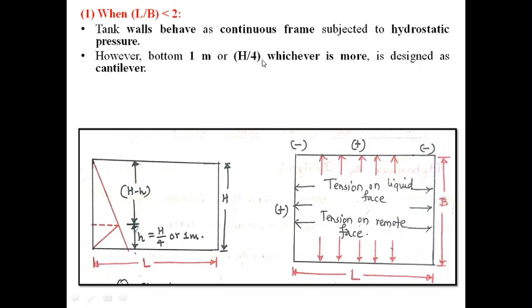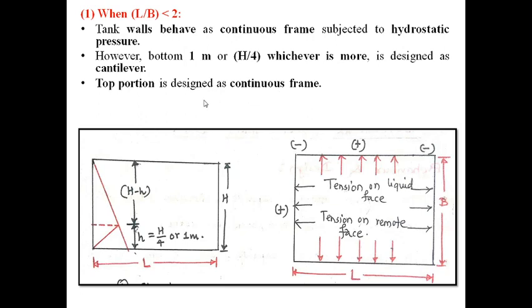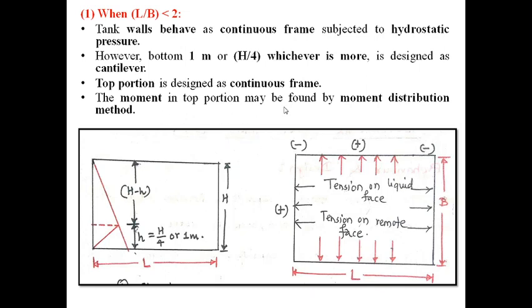For example, suppose H is 3 meters. Then H/4 is 0.75 meter, so in that case we consider 1 meter because 1 meter is greater. On the other hand, if height is 6 meters, then H/4 is 1.5 meters, and in that case the cantilever portion is taken as 1.5 meters because that is greater. The top portion is designed as a continuous frame, and the moments may be found by the moment distribution method learned in structural analysis.